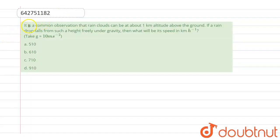In this question it says that it is a common observation that rain clouds can be about one kilometer altitude above the ground. If a rain drop falls from such a height freely under gravity, then what will be the speed in kilometer per hour?